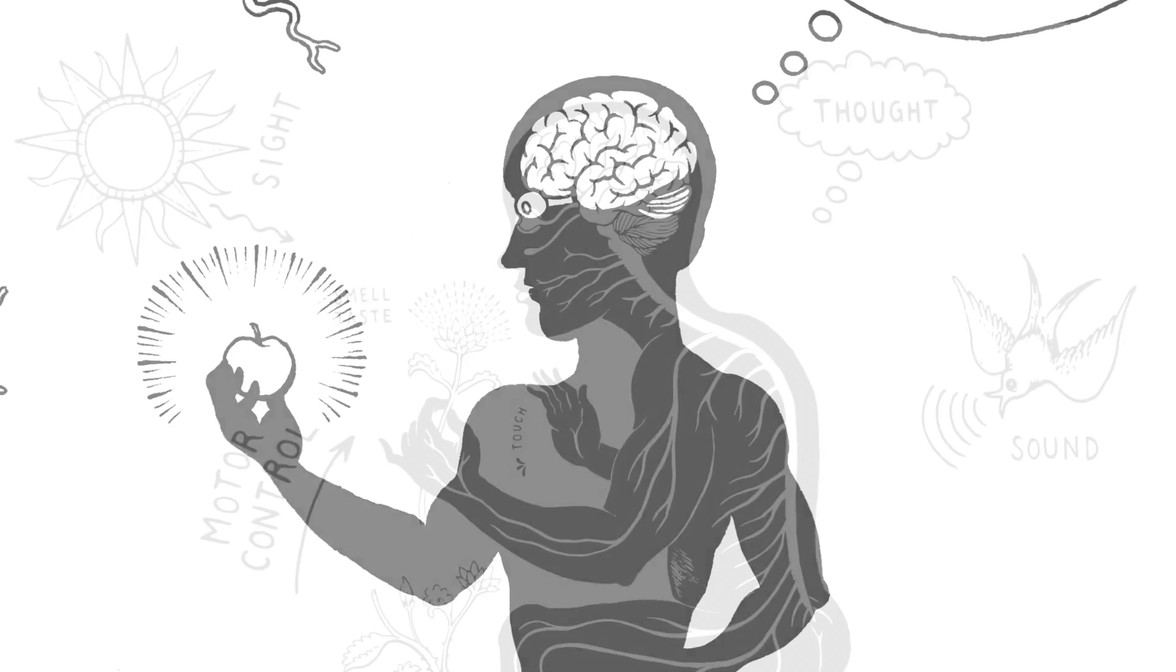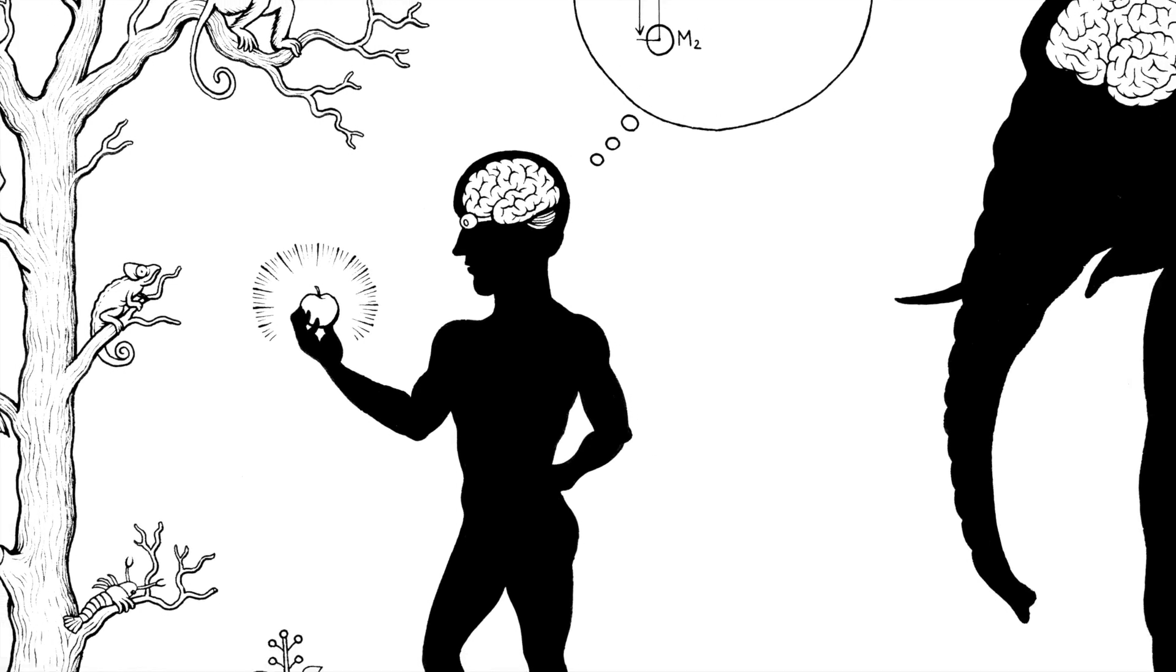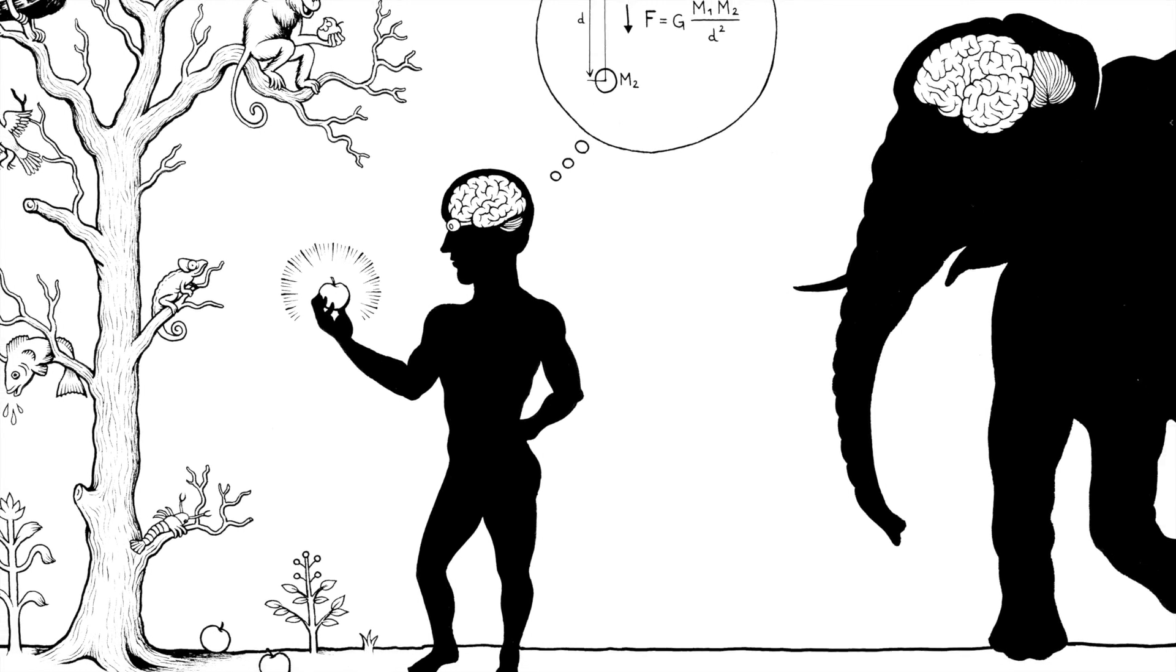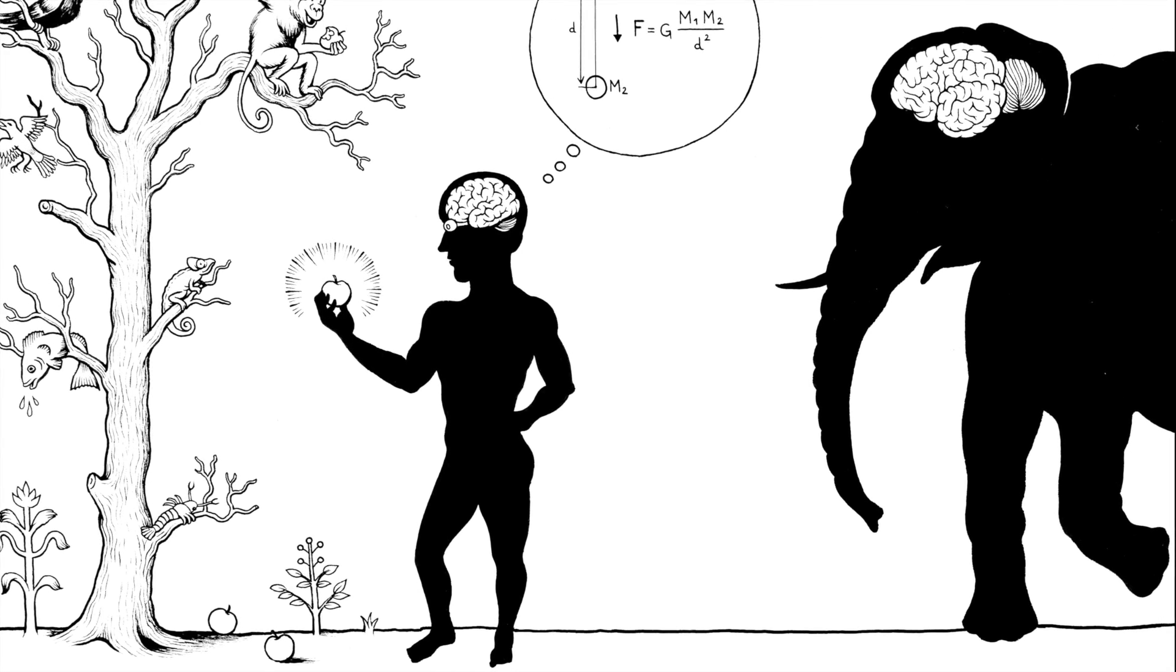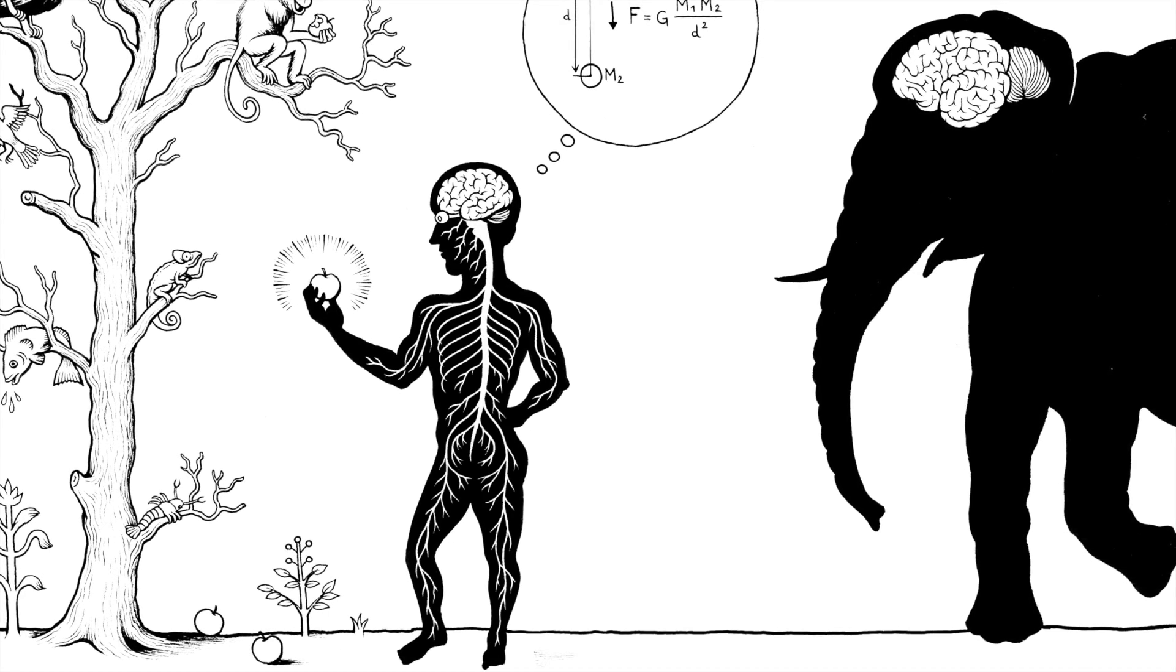Our brains are among the largest in the animal kingdom, but elephants, whales, and dolphins have even bigger brains. So clearly size isn't everything. The key to the human brain's unique capacities is not its size, but its inner wiring.